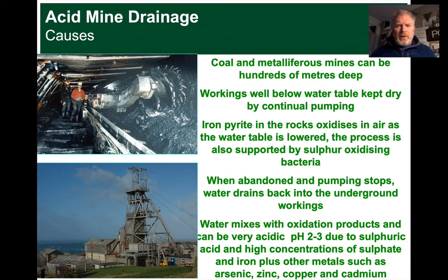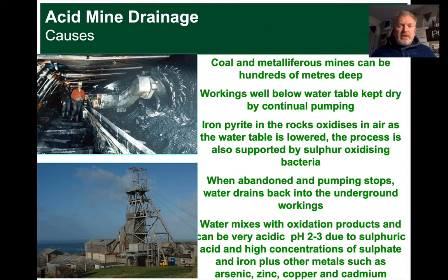When a mine is actually working, these underground passages, if they go below the water table, are kept dry by pumping. But the rocks that are being dug out, whether it's coal or metal ores, can contain pyrite - that's iron sulphide. This pyrite is quite reactive; it will oxidise. When it oxidises, we get a couple of different products: ions of iron that will make an orange, non-crystalline material, and the sulphur within that pyrite will be released and can dissolve into water and acidify it.